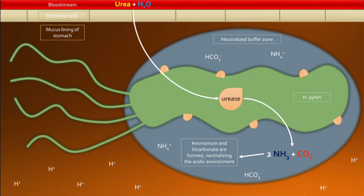Ammonia has a higher pH, so because of this production of carbon dioxide and ammonia from the breakdown of urea, H. pylori tries to neutralize the pH in the area it has invaded so that it can establish its colony and proliferate. The problem is that ammonia is a toxic molecule and can have a deleterious effect on the surrounding cells.